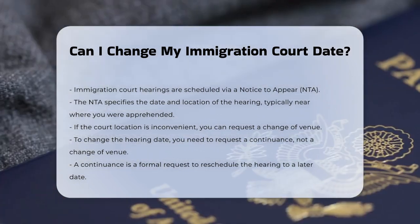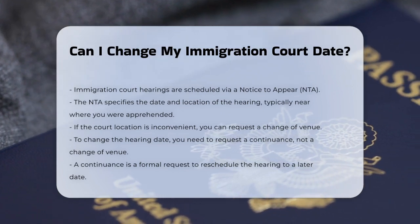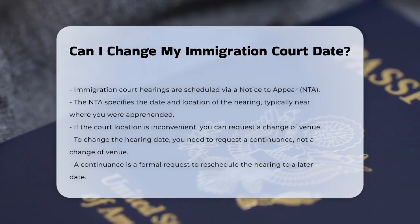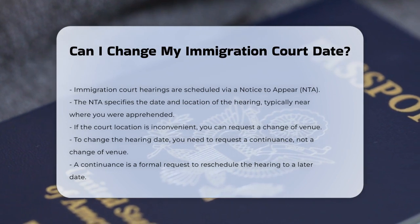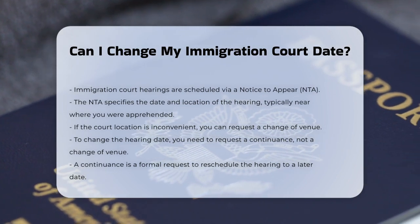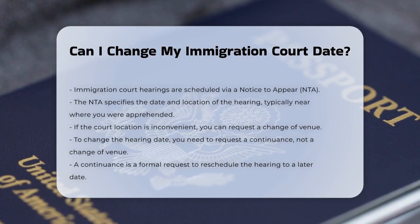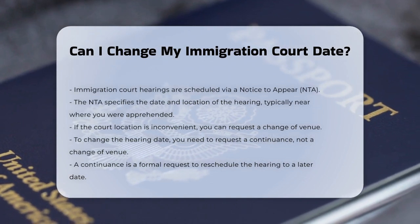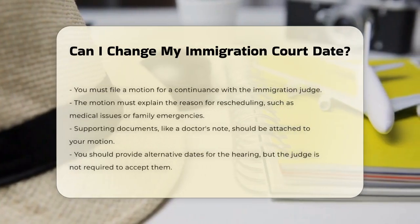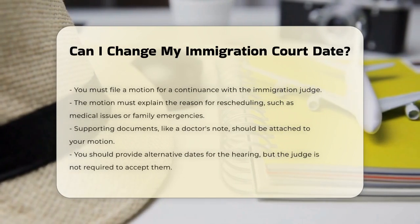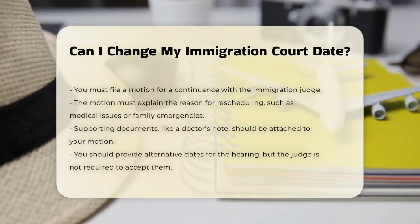However, if this location is inconvenient for you — especially if you have family or friends in another part of the country — you might want to request a change of venue. To change the date of your immigration court hearing, you actually need to request a continuance, not a change of venue. A continuance is a request to reschedule the hearing to a later date.